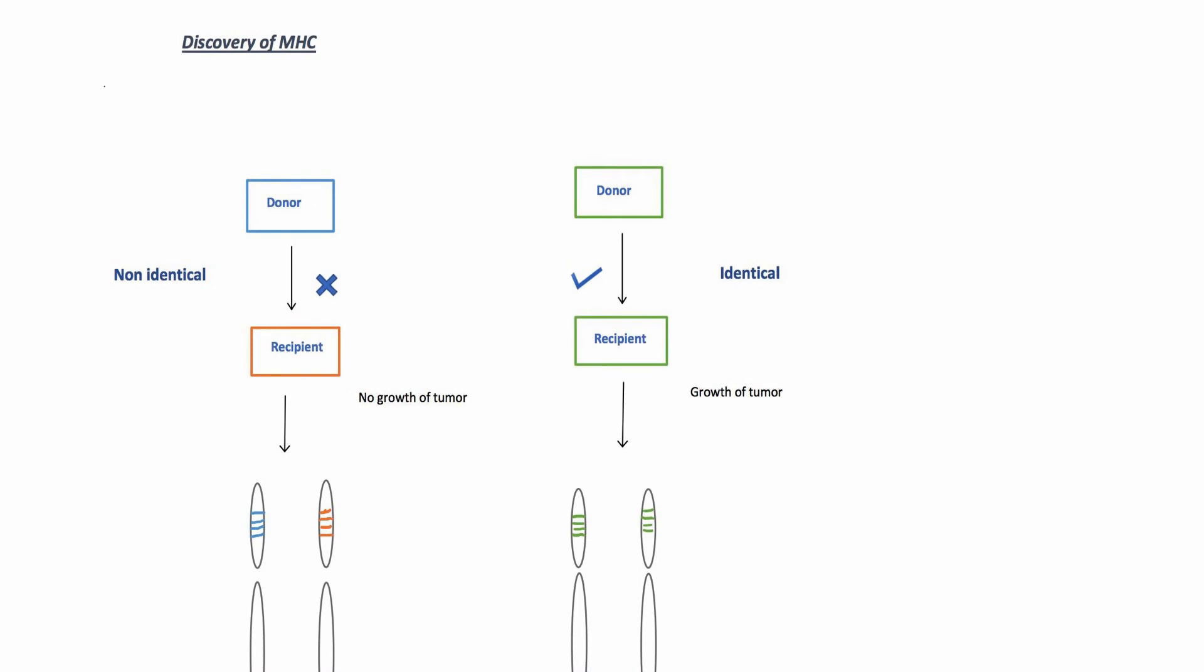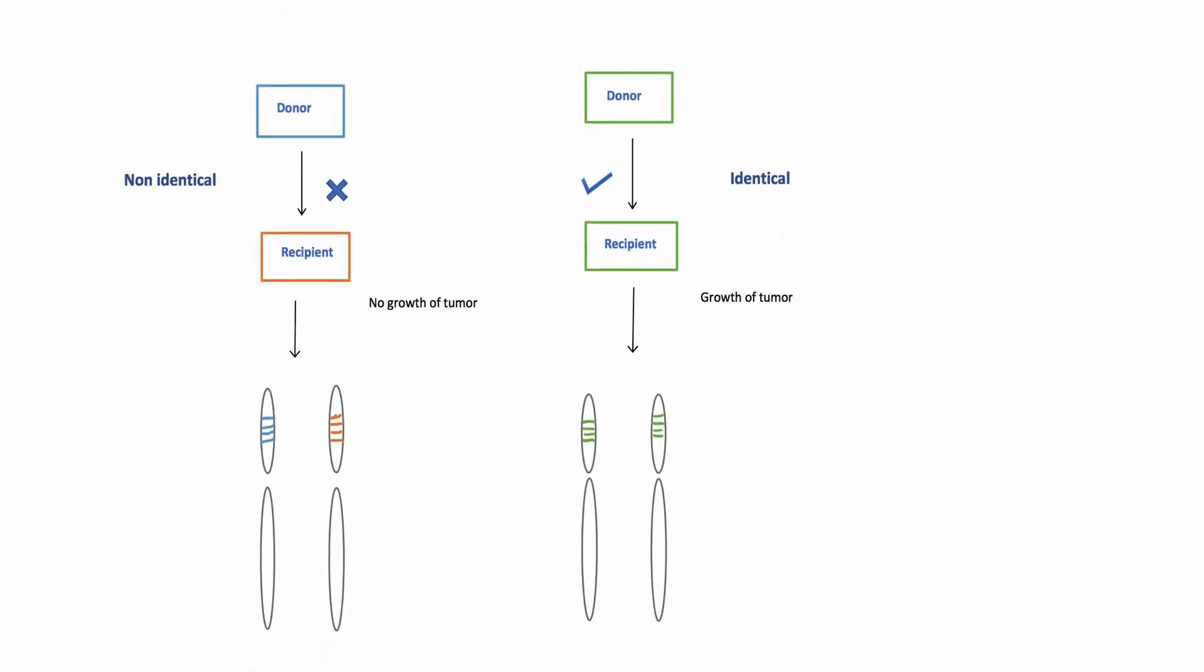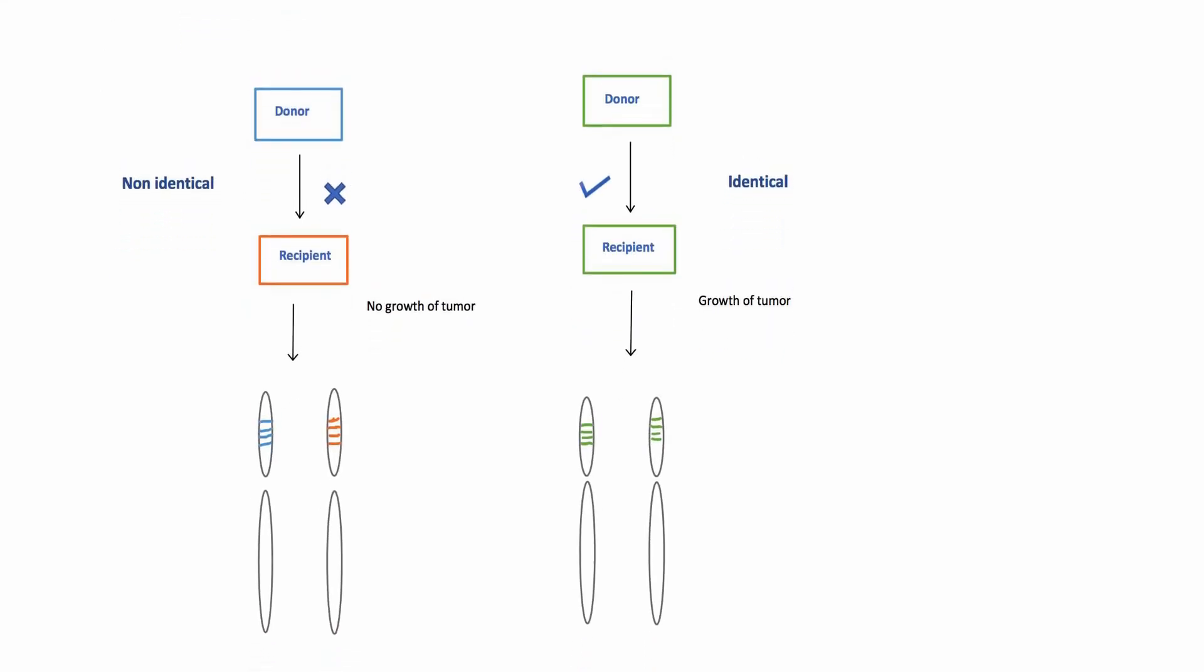So MHC molecules present peptide antigens to T cells. To understand the nomenclature related to this system, we need to understand how these molecules were discovered. When scientists tried to transplant tumor in genetically non-identical mice, it resulted in rejection of tumor. However, if the recipient was genetically identical to the donor, it resulted in growth of the tumor in the recipient. It was considered that the presence of an immune response resulted in rejection of tumor in genetically non-identical recipient.